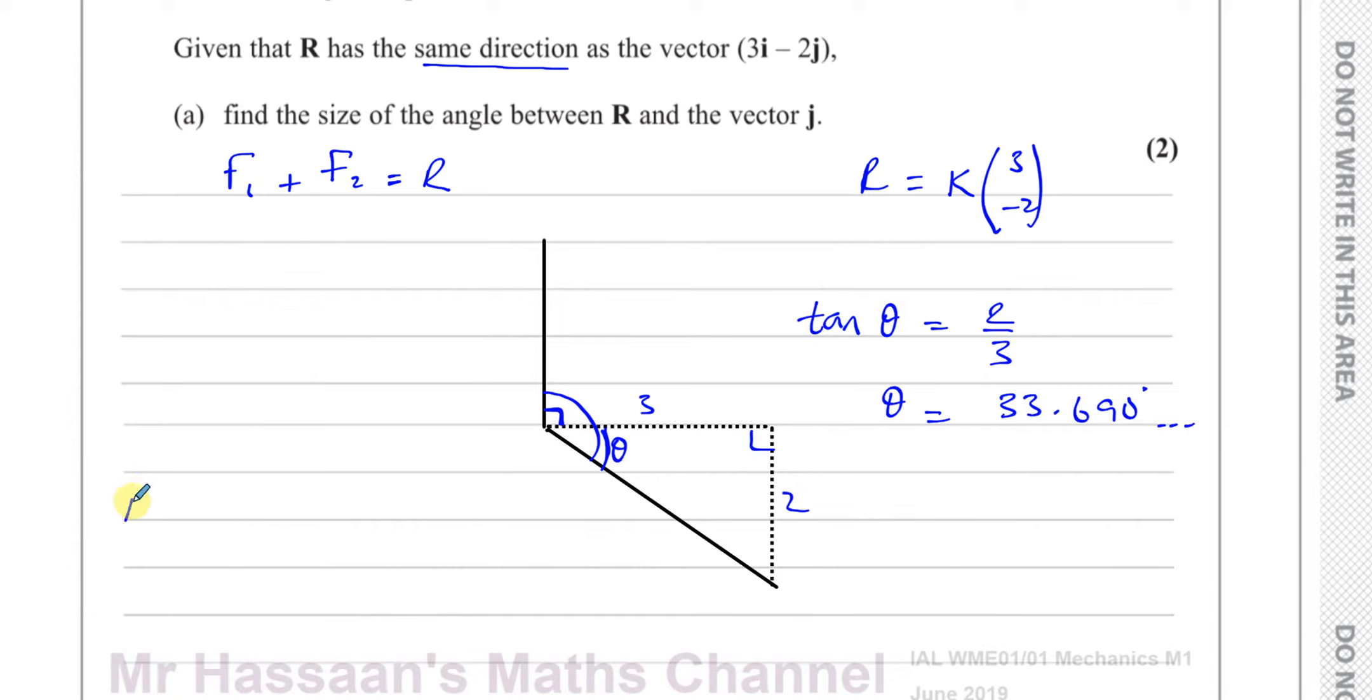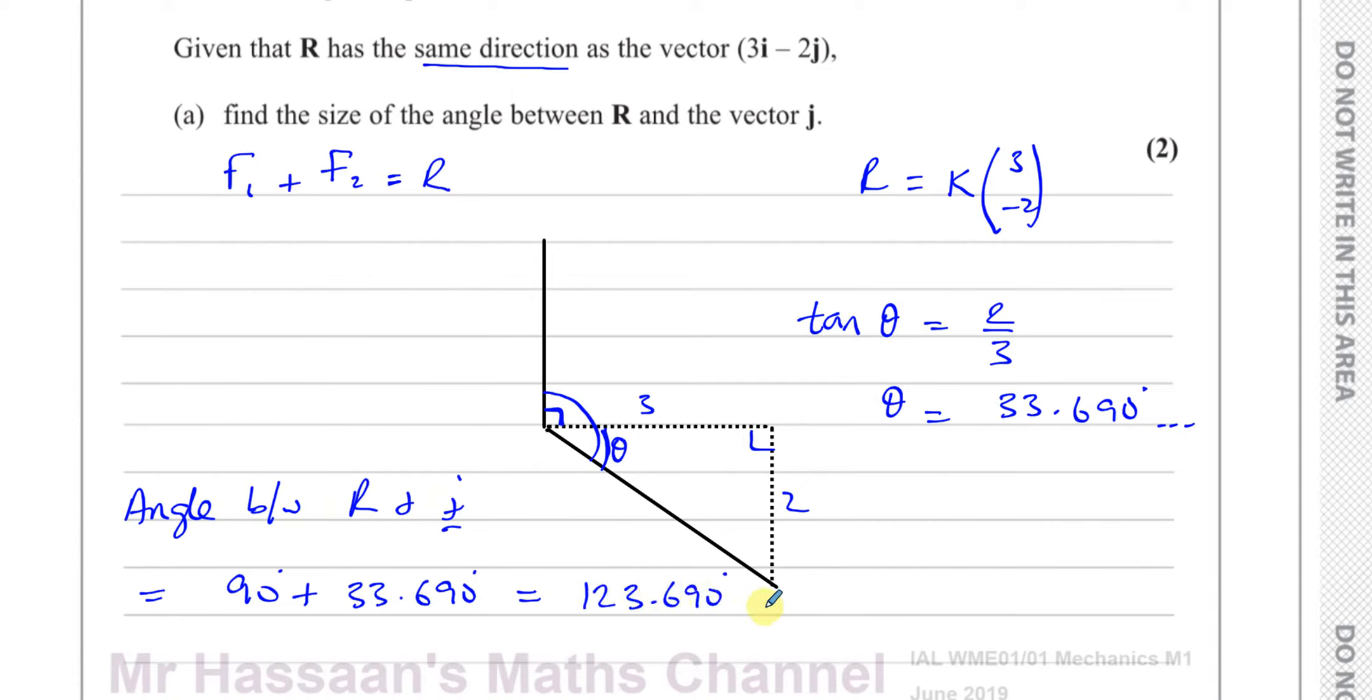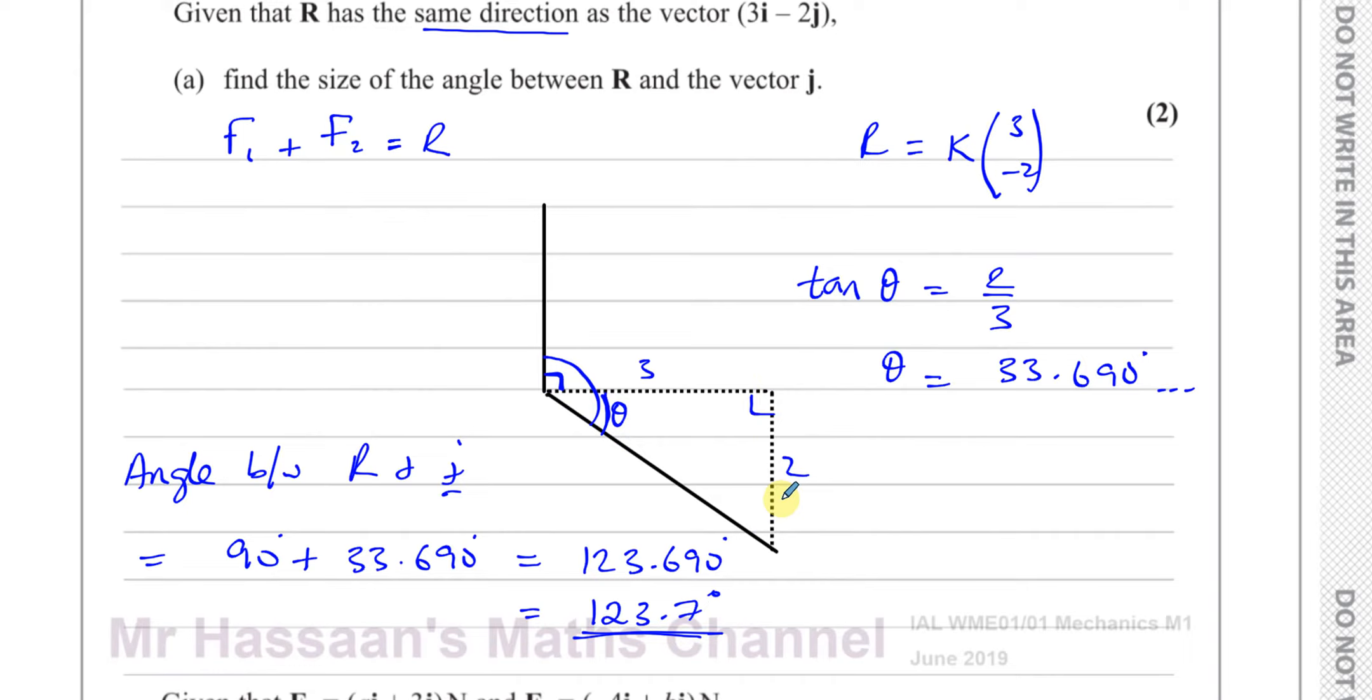So we can say that the angle that we're looking for, the angle between R and the vector j, is equal to 90 degrees plus 33.690 degrees. So we take the angle that we found and we add 90 to it, and that will give us 123.690. Now angles should always be rounded to the nearest one decimal place, so it's 123.7 degrees. That's how we're going to round our answer in the end. There's the answer to part A.